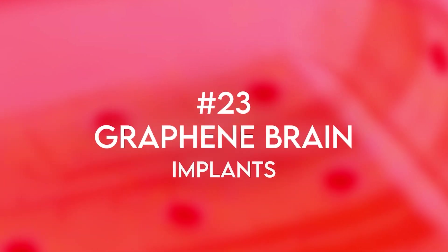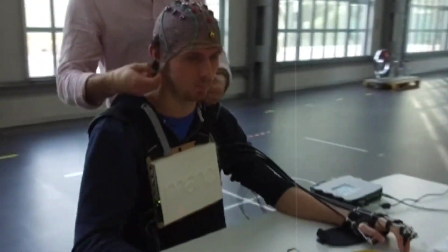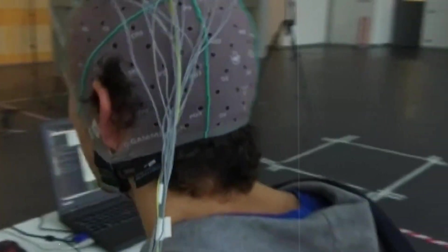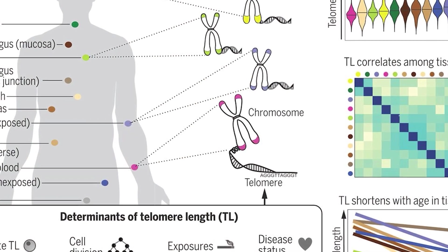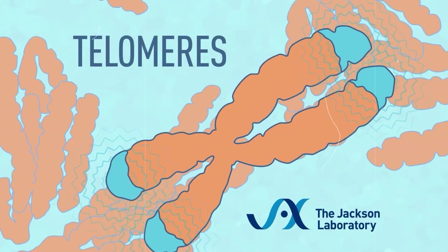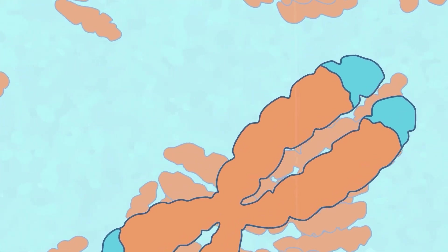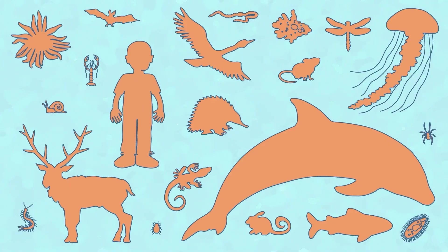Number 23. Graphene brain implants. Innovative graphene-based implants have been developed to monitor neural activity with high precision, advancing brain research. That brings us to aging, a mystery now challenged by telomere length with balancing mechanisms. Number 24. Regulation of telomere length. Mechanisms that control telomere length have been discovered by recent study, which may have consequences for studies on cancer and aging.